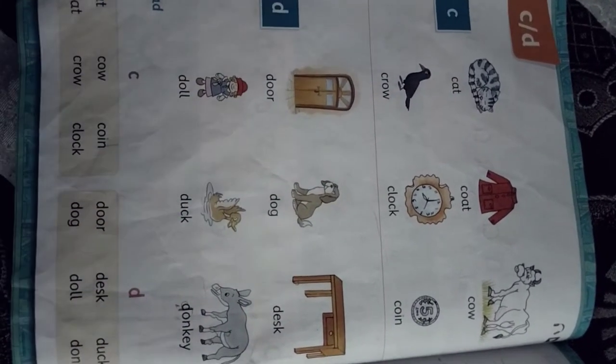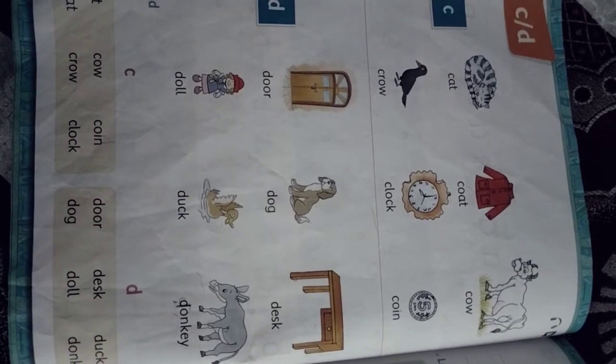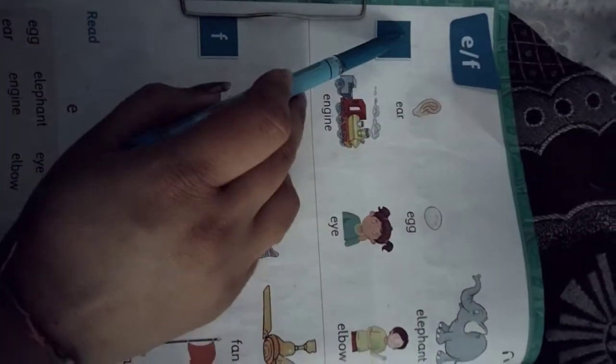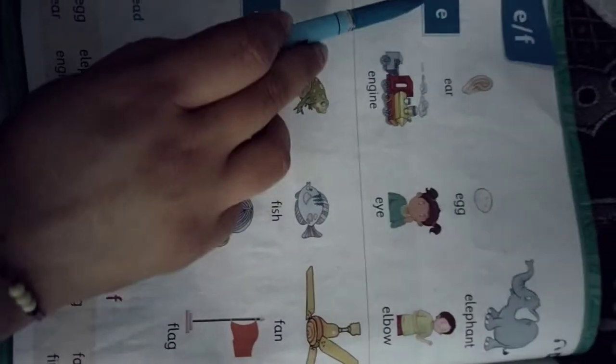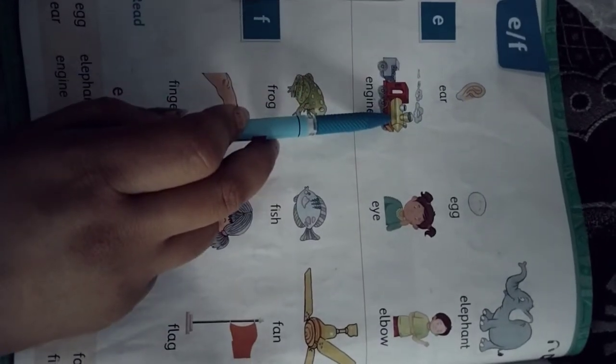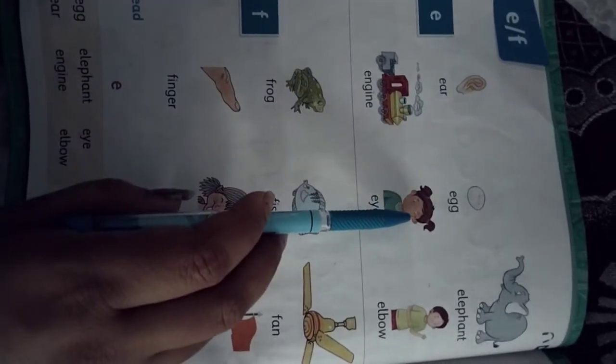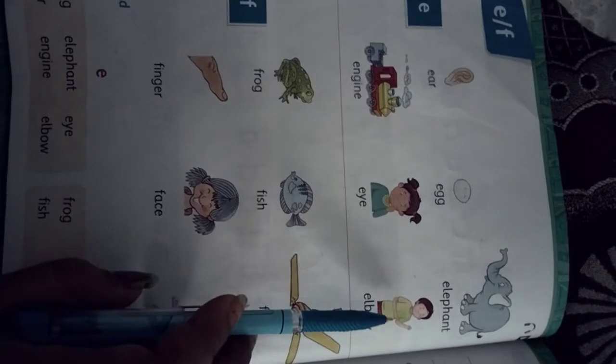Now D, after D which letter will come? E. Letter E. E for Ear, E for Egg, E for Elephant, E for Engine, E for Eye, E for Elbow, E for Eagle.